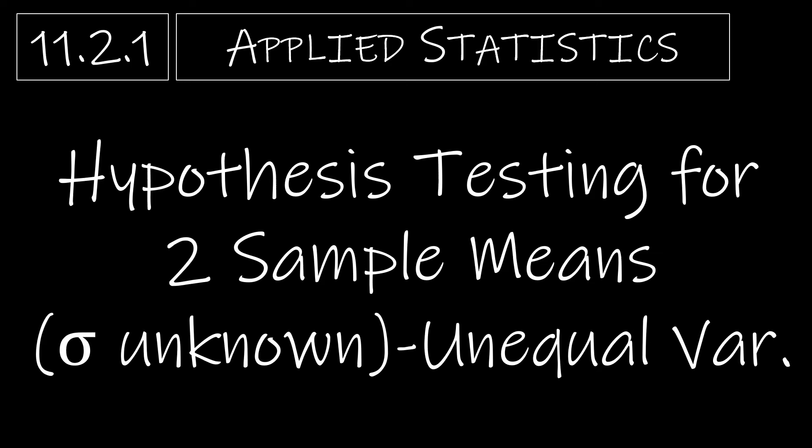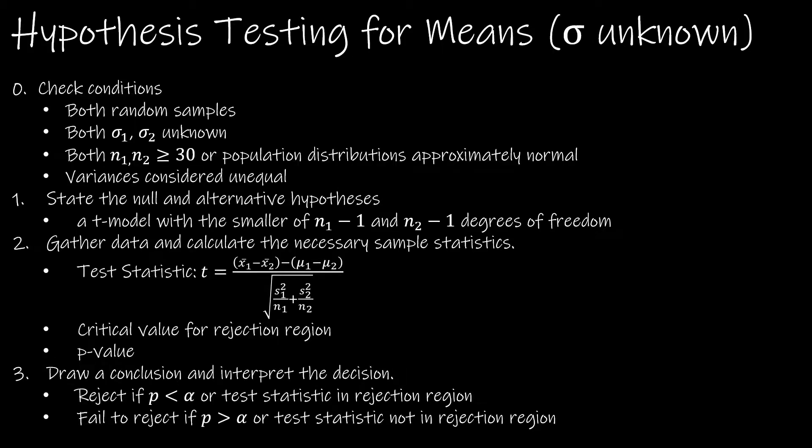11.2.1 is hypothesis testing for two sample means where sigma is unknown and unequal variances. Here's your summary page.